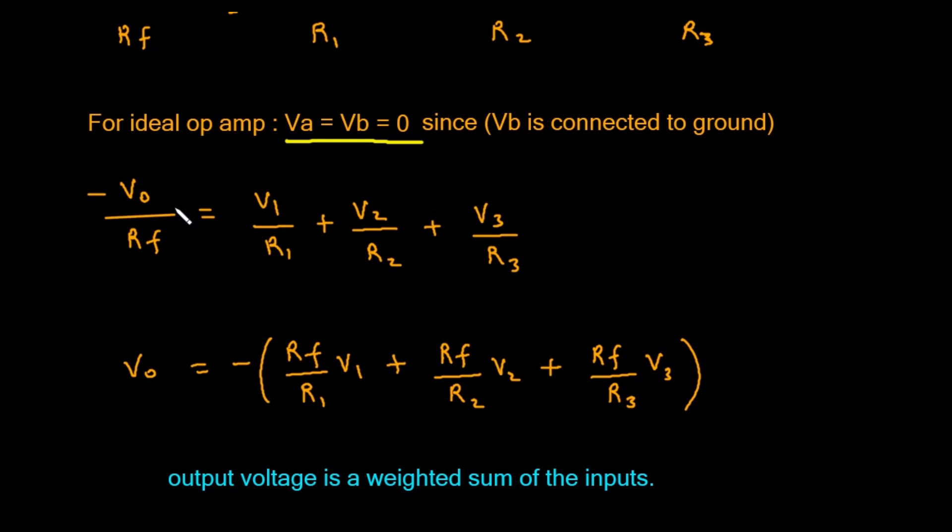Now, we can go back to our big, complicated equation and replace every instance of Vi with 0. Our equation becomes: on the left side, (0 minus Vo) divided by Rf, and on the right side, (V1 minus 0) divided by R1, plus (V2 minus 0) divided by R2, plus (V3 minus 0) divided by R3.